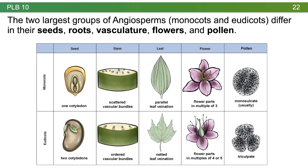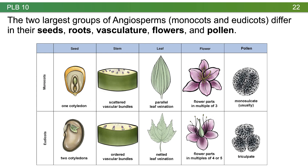The two largest groups of angiosperms are the monocots and eudicots — we also spent time on basal angiosperms. They have differences in their seeds, roots, vasculature, flowers, and pollen. You should familiarize yourself with this chart so that if shown something like a leaf with netted venation, you can predict all characteristics associated with it as a eudicot.